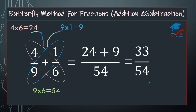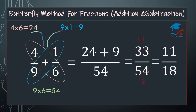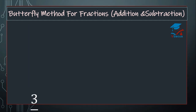Bring it to the lowest term. Both the numerator and denominator are divisible by 3. So 3 elevens are 33, and 3 eighteens are 54. So your answer will become 11 over 18. Let us go to the next sum of subtraction.